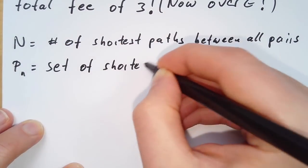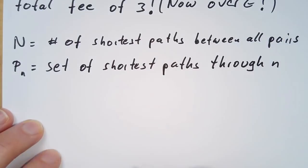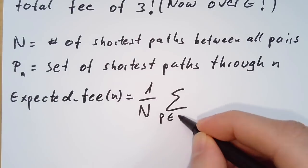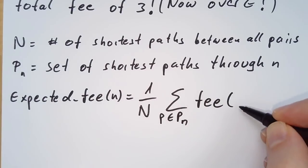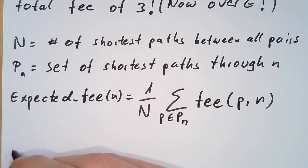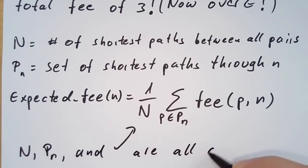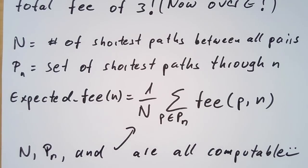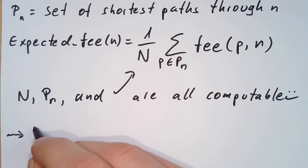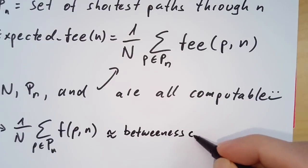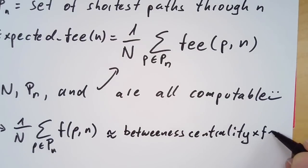PN is the set of shortest paths that go through a node N, and the expected fees that a node N earns is one over big N times the sum over all fees of paths that go through node N — just the fee that node N earns. N, PN, and this sum are all computable. If we take this sum, we can basically say this is the betweenness centrality multiplied by the average node fee. So now we can compute the expected earnings for every node in the Lightning Network and compare them with other statistics — for example, the number of neighbors, the fee rate charged, or the betweenness centrality of the node.